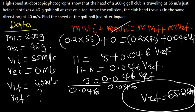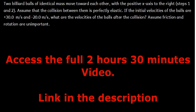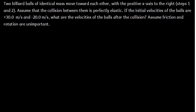Now, what if you have been given a question where you have two missing variables — how can you find the velocities? Here's a question: two billiard balls of identical masses move toward each other along the positive X axis. Assume the collision is perfectly elastic. The initial velocities are +30 m/s and −20 m/s respectively. What are the velocities of the balls after the collision?